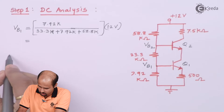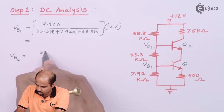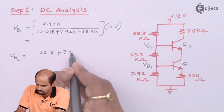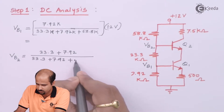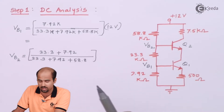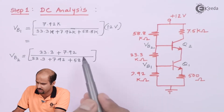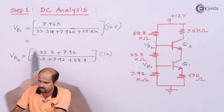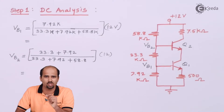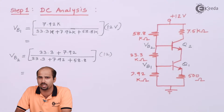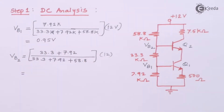Pause and calculate VB1 and VB2. VB1 = 0.95 V and VB2 = 4.95 V. Now we find IE. Since IB1 and IB2 are neglected, IE1 = IE2 = IC1 = IC2 = IC. Applying KVL to loop A: VB1 = VBE1 + IE × RE.